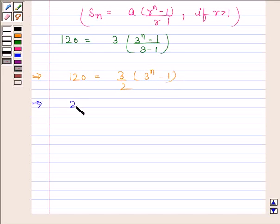This implies 80 is equal to 3 to the power N minus 1. And this implies 81 is equal to 3 to the power N.